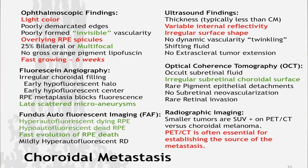Most metastases are fairly lightly colored. They tend to have overlying retinal pigment epithelial spicules — RPE spicules. They tend to be faster growing than melanomas, which is very important because if you say 'come back in 8 to 12 weeks,' the tumor could get quite large in a patient with choroidal metastasis. They also tend to have more microaneurysms than a melanoma, and a slightly different pattern of fundus autofluorescent imaging.